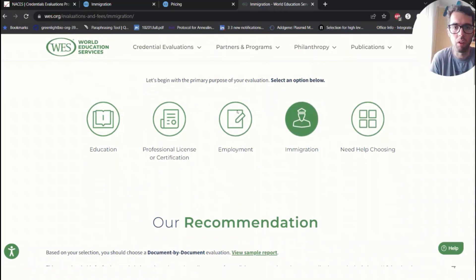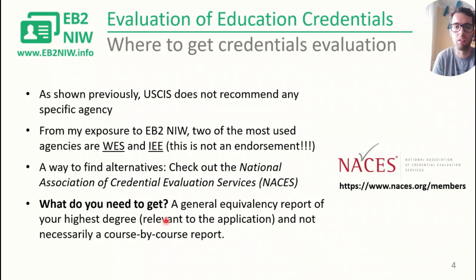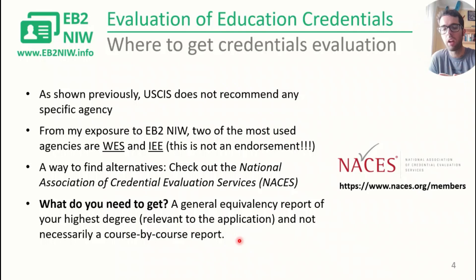What do you need to get from these agencies? You need a general equivalency report of your highest degree — the degree that is relevant to your application. If you have a degree that is not at all relevant to what you are telling USCIS you want to do in the US, don't bother with that one. You don't necessarily need a course-by-course report showing all the courses you've done and how they're equivalent to US courses. You need a general report showing that your foreign degree is equivalent to a specific American degree.